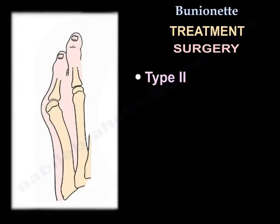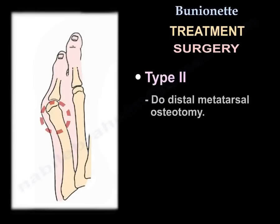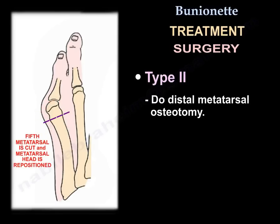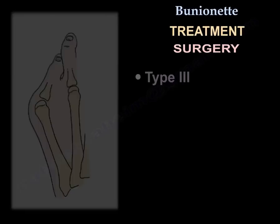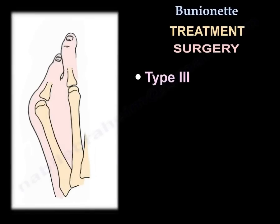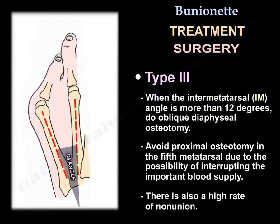In Type 2, which involves bowing of the diaphysis, you perform a distal metatarsal osteotomy. In Type 3, when the intermetatarsal angle is more than 12 degrees, you will perform an oblique diaphysial osteotomy.